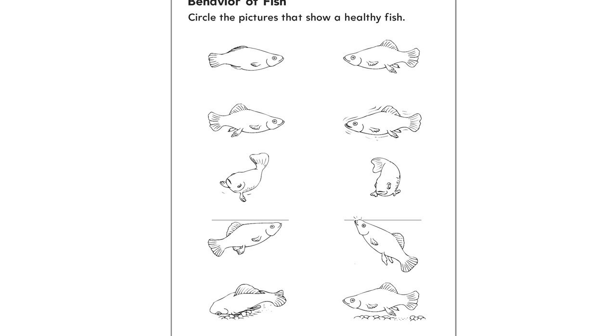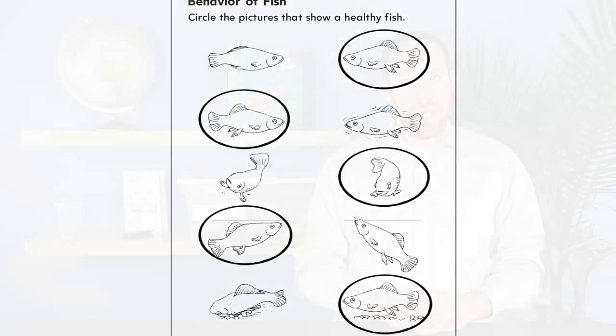If you observe any of these behaviors, consult your local pet store for advice on what to do. Have students complete Part B of the activity sheet. For each pair of pictures, instruct them to circle the picture that shows a healthy fish. Let students know that in the next activity they will observe the behavior of pond snails.